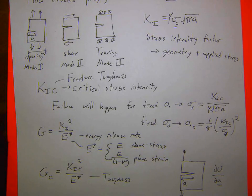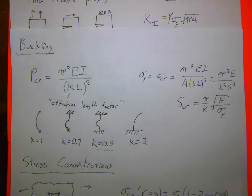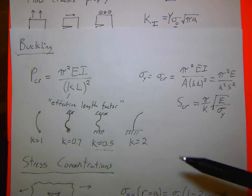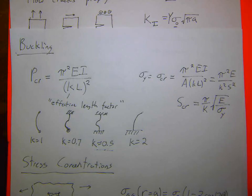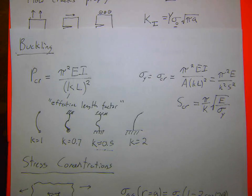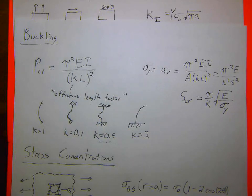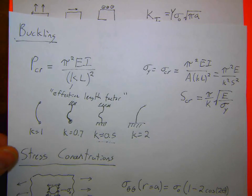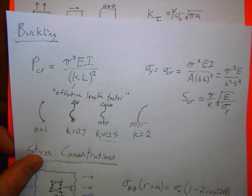A student asked about deriving the effective length factors for buckling. The instructor said not to worry about deriving them — they showed it because they don't like throwing results out without explanation, and the derivation follows from beam theory. But for the test, just know these relationships.